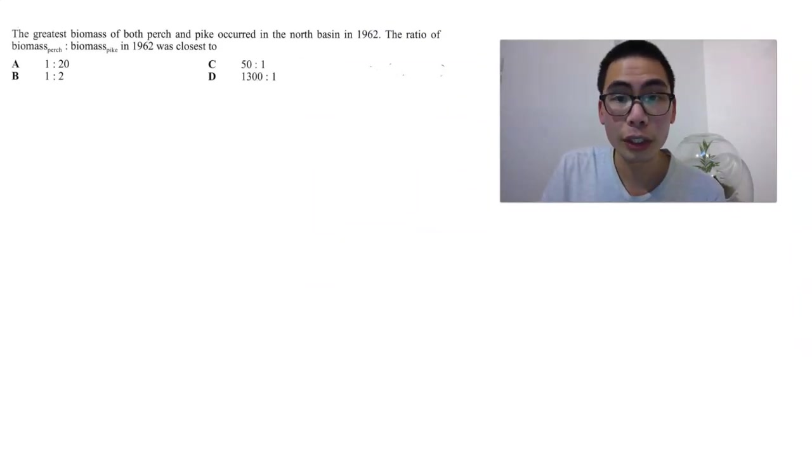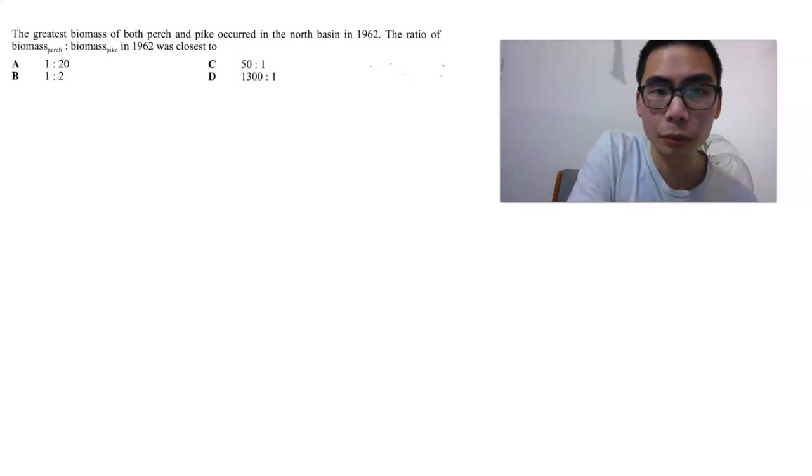The question starts here, and obviously the graphs are in the stimulus, which is not shown yet. Let's just look at the questions first. The greatest biomass of both perch and pike occurred in the North Basin in 1962. The ratio of biomass of perch and biomass of pike in 1962 was closest to... They're asking us to calculate a ratio.